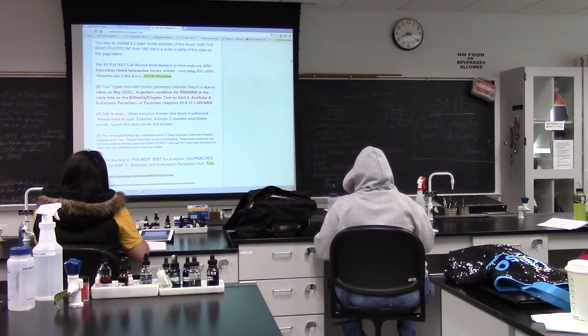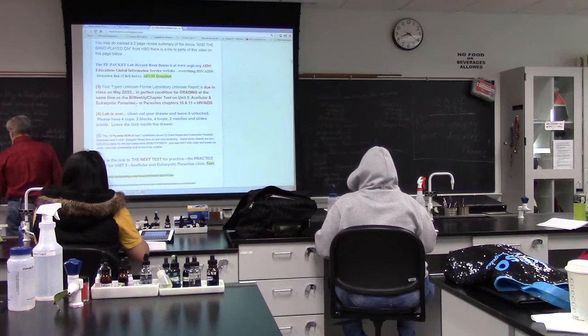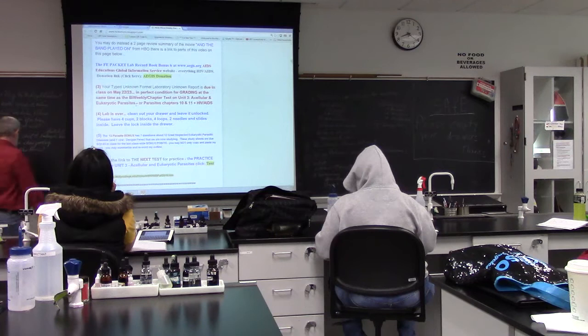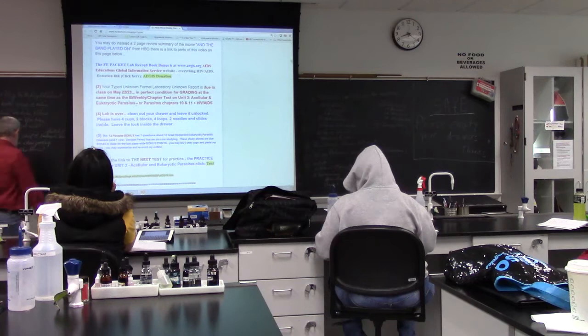You can choose to do a summary of 'And the Band Played On' — this is for the AIDS denialist paper and it must be one and a half to two pages long, for five points on the final exam.